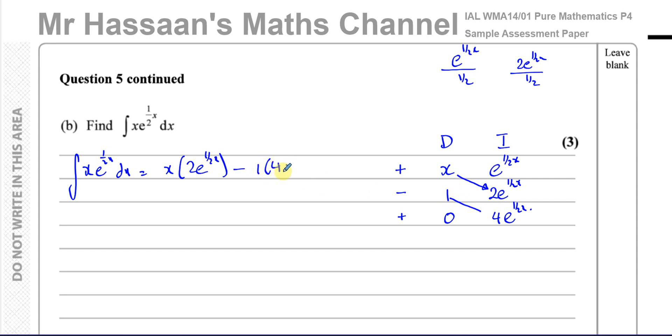And then the rest is going to be zero, so you just put, because it's an indefinite one, you put plus c at the end. So simplifying that, you'll get 2xe to the power of a half x minus 4e to the power of a half x plus c.